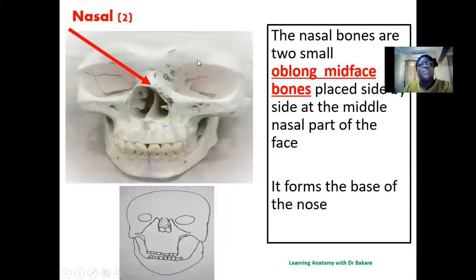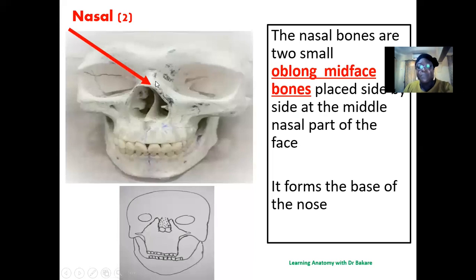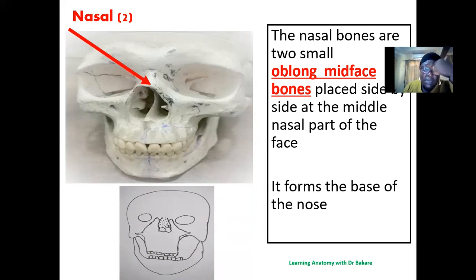The nasal bone. The nasal bones are also two in number; they are oblong in shape and are located around the midline of the face just above the nasal region. One on the right and one on the left, they form the base of the nose. You can feel the nasal bone at the root of the nose on physical examination.